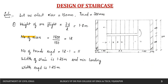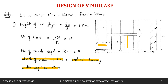For one flight height of 1.8 meters: 1800 mm divided by riser 150 mm gives 12 risers. Number of treads required will be 12 minus 1, which equals 11 numbers. Width of the stair is 1.25 meters and minimum landing width required is also 1.25 meters.